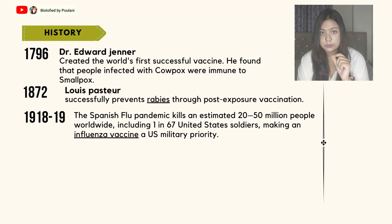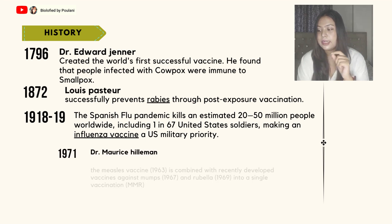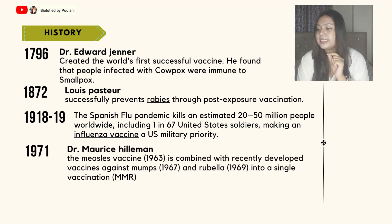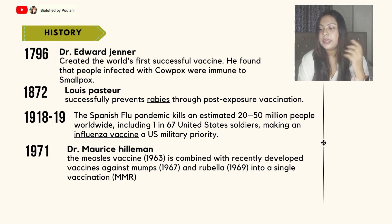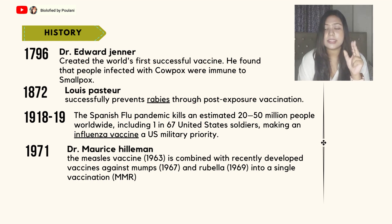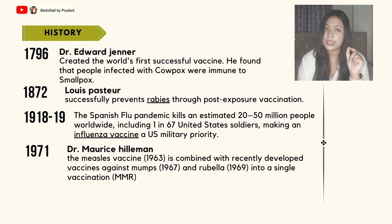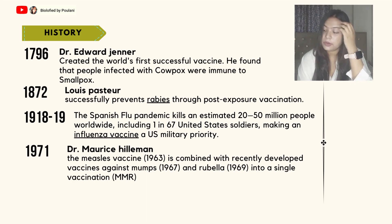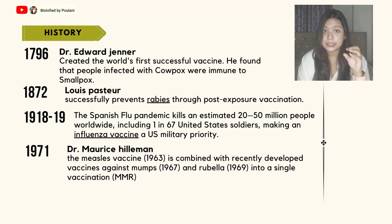During the Spanish flu, 20 to 50 million people worldwide were affected. The influenza vaccine became a very important vaccine for the US army because the Spanish flu was a very deadly disease. Next, in the year 1971, the measles vaccine was combined with mumps and rubella — we call this MMR — into a single vaccine. Dr. Maurice Hilleman discovered this vaccine, with which three viral diseases — mumps, measles, and rubella — could be controlled with one vaccine.